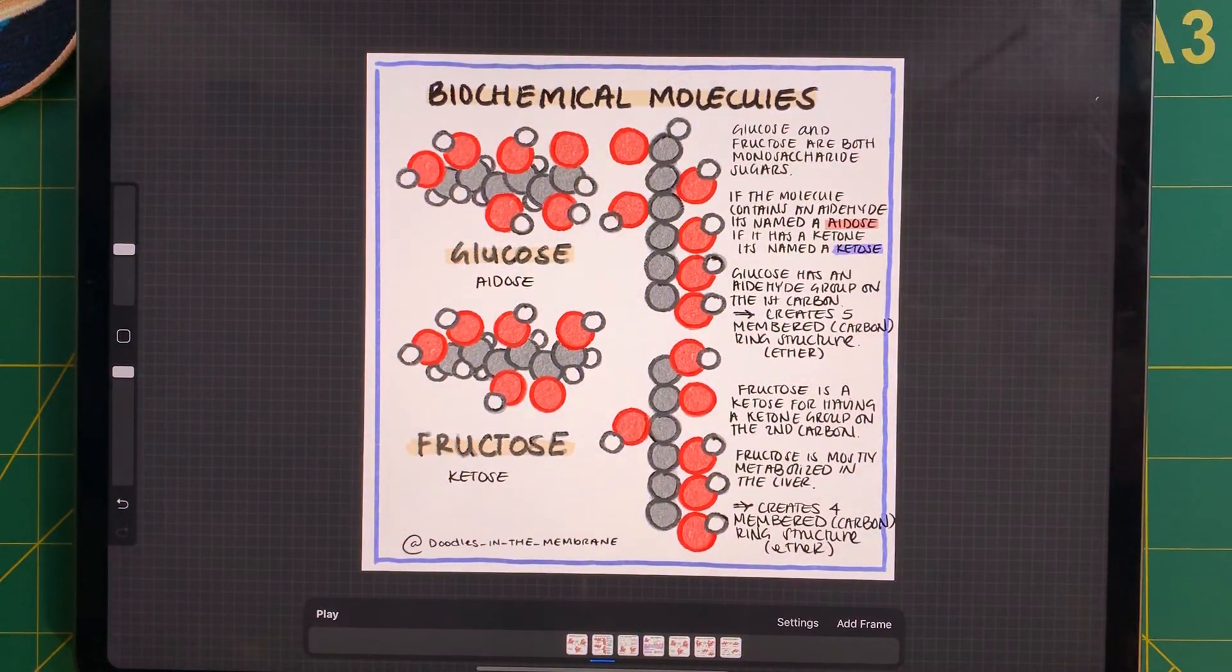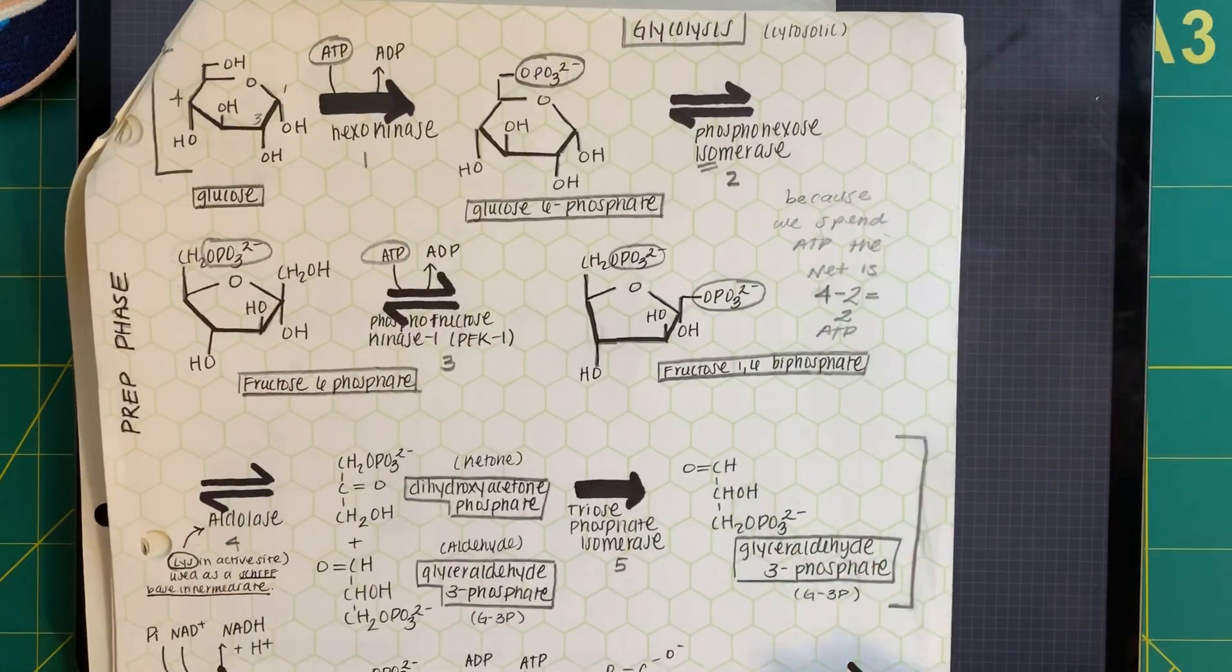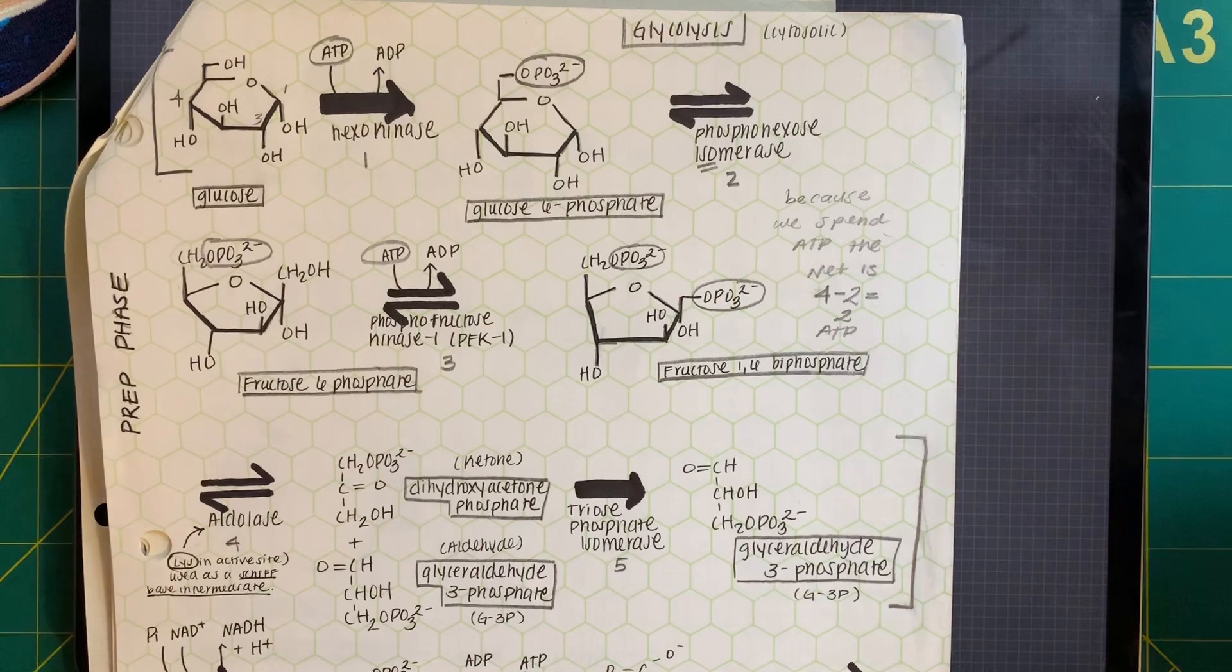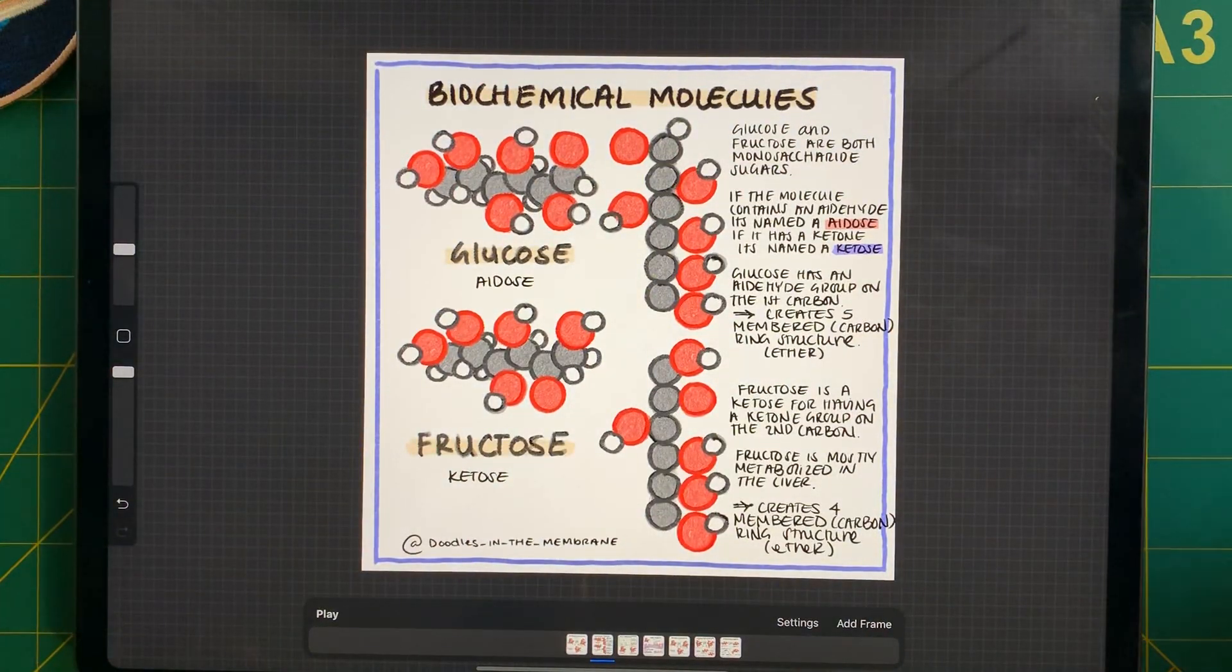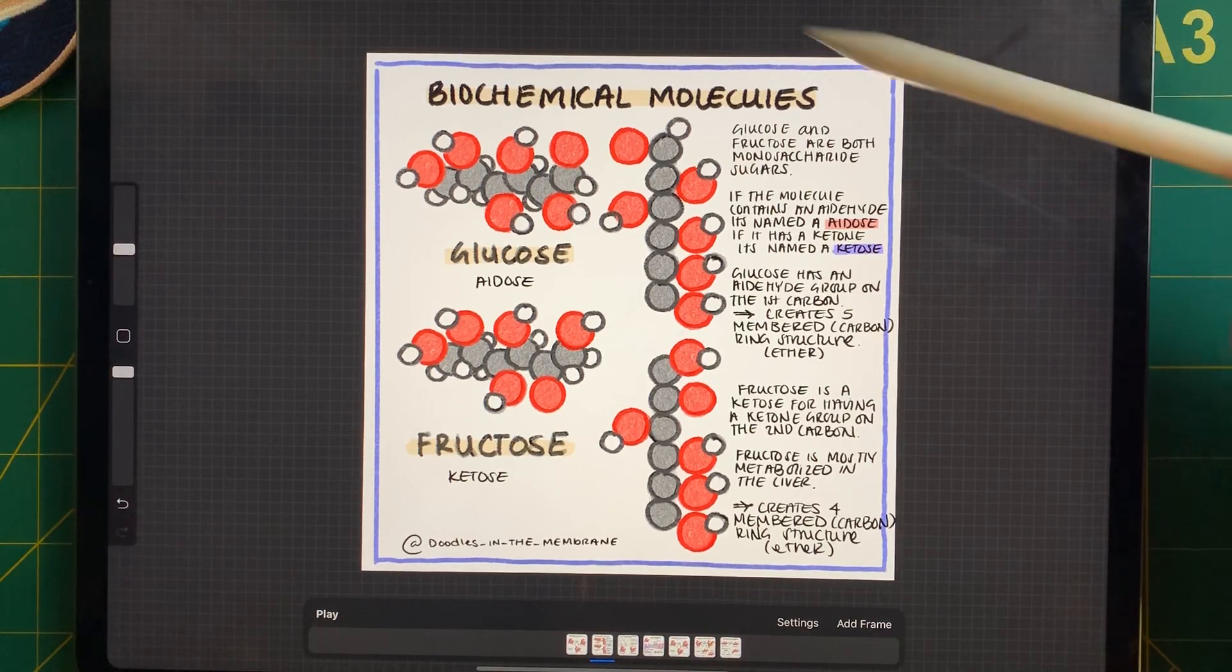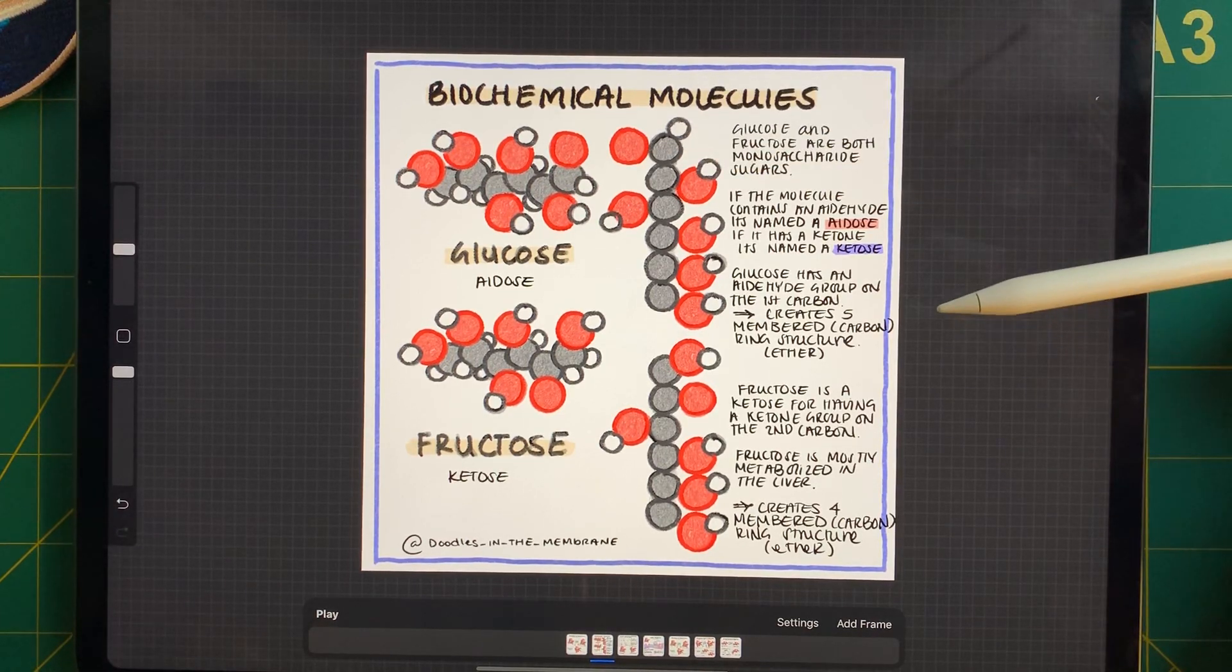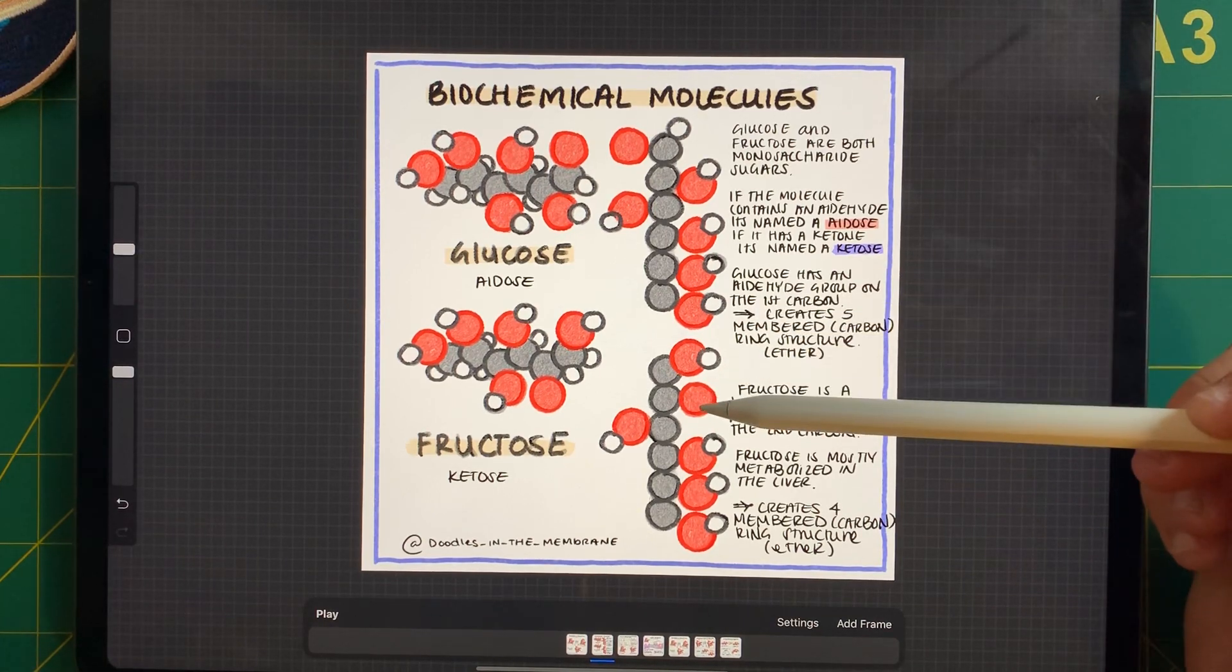So glycolysis is a multi-step biochemical pathway. And in my opinion, before we start diving into the details of this pathway, it's kind of good to start talking about glucose. So we have glucose, which is an aldose, meaning that it has an aldehyde group. But we also have fructose. Fructose is a ketose, which means it has a ketone group.